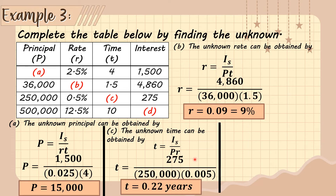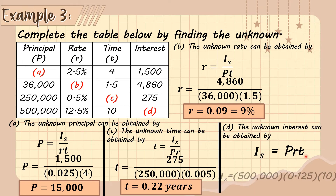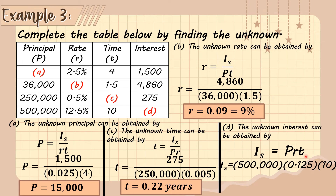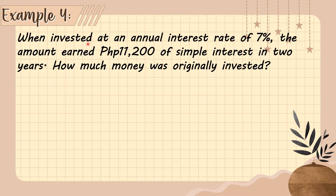For letter D, the given are the principal, rate, and time, and we need to find the interest. Using the formula I_s = P × r × t, we substitute: 500,000 × 0.125 × 10, and the product is 625,000. So the simple interest is 625,000 pesos.